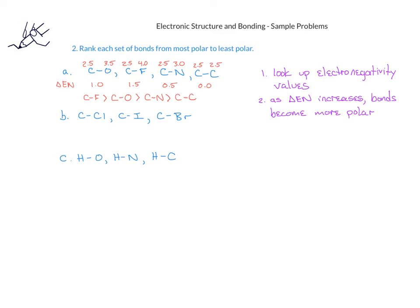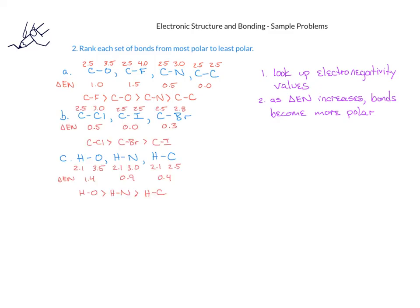You should pause this video now and look up the electronegativity values for the atoms in parts B and C, and then rank them from most polar to least polar. If you've done the problems correctly, you should see that the carbon-chlorine bond is more polar than the carbon-bromine bond, which is in turn more polar than the carbon-iodine bond. For problem C, the hydrogen-oxygen bond is most polar, the hydrogen-nitrogen bond is somewhat polar, and the hydrogen-carbon bond is not very polar at all, with just a difference of 0.4.